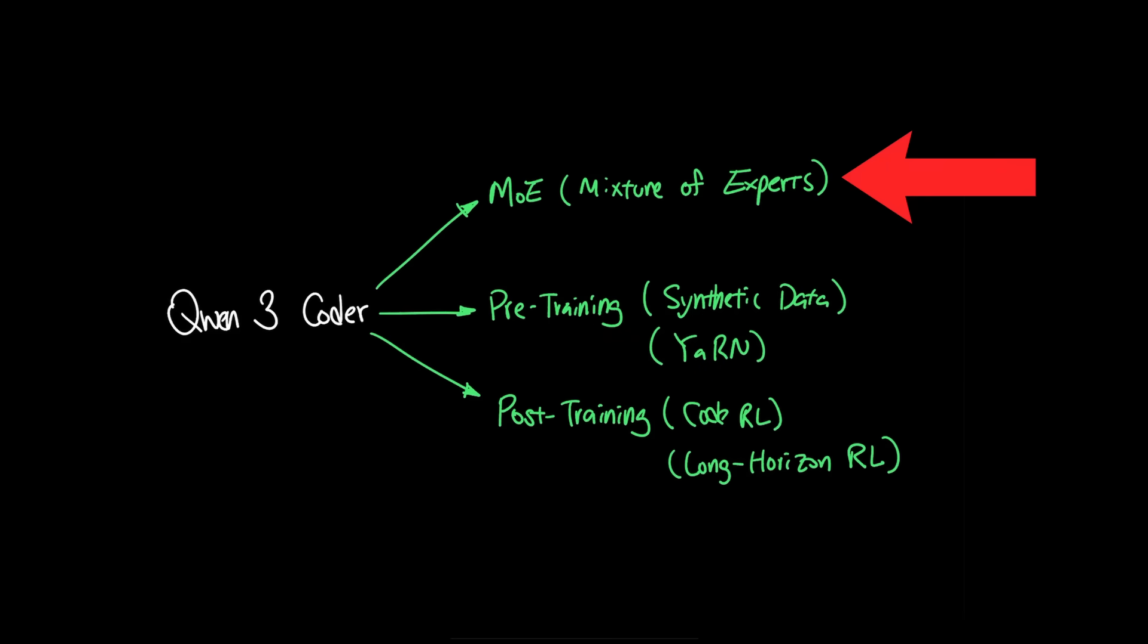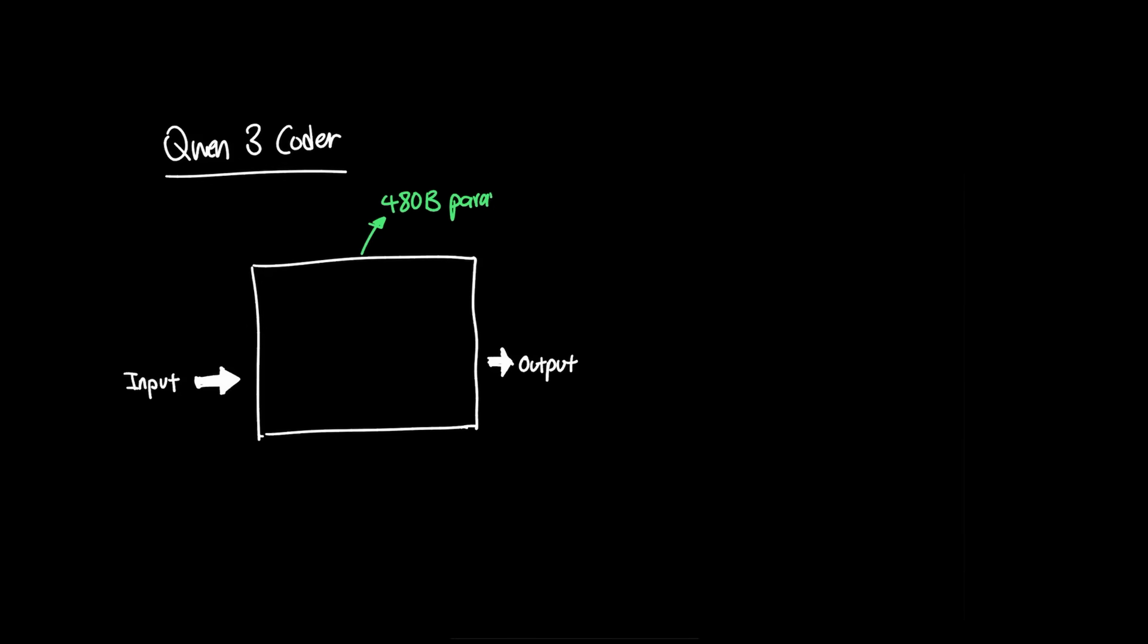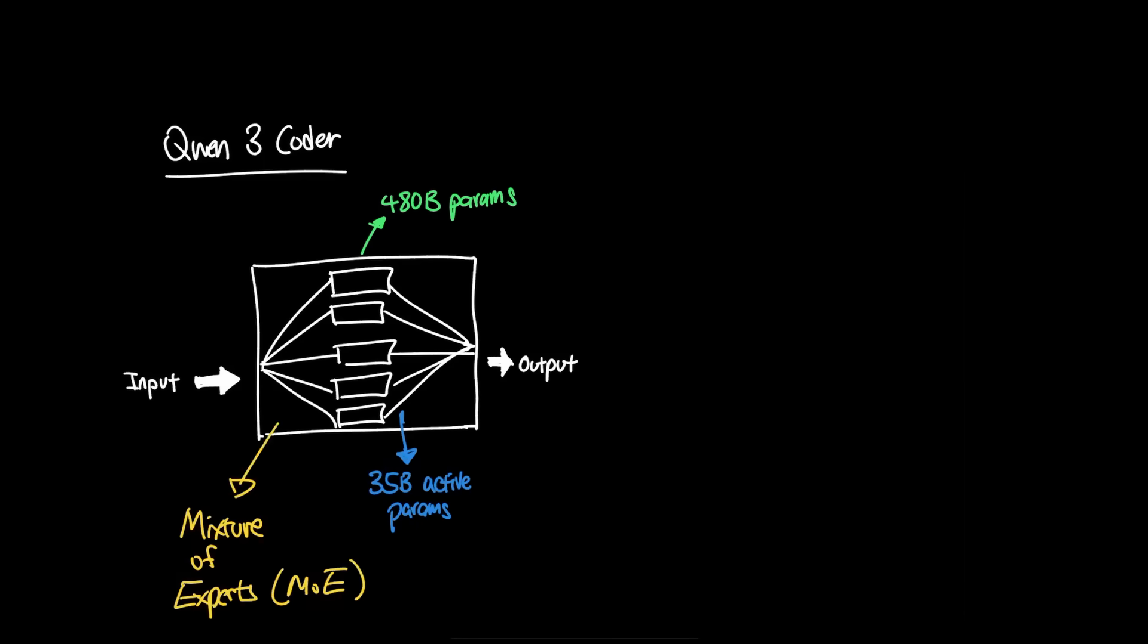Starting with Moe, or Mixture of Experts. Quen3 is 480 billion in size with 35 active parameters, which is known as Mixture of Experts, where it only activates a small portion or portions of the model to make inference.